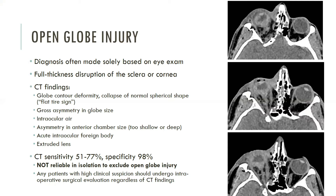CT findings suggestive of an open globe injury include globe contour deformity with collapse of the normal spherical shape—the flat tire sign—gross asymmetry in globe size, intraocular air, extrusion of the lens outside of the globe, an acute intraocular foreign body, and asymmetry in anterior chamber size, either too shallow or too deep compared to the contralateral normal globe. Although CT has a reported sensitivity of 51 to 77 percent and specificity of 98 percent, it is not reliable in isolation to exclude these injuries. In the setting of high clinical suspicion, a formal intraoperative surgical evaluation is warranted regardless of cross-sectional imaging findings.